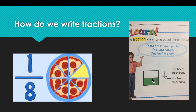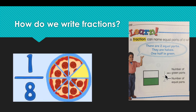Here we have a square divided into two equal parts. This square has only two parts, so we write number two under the line. Only one part is green, so number one is written on the top. We call this fraction one-half.